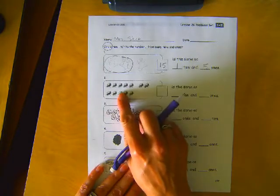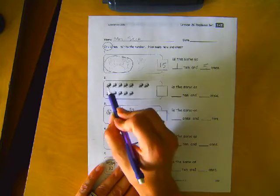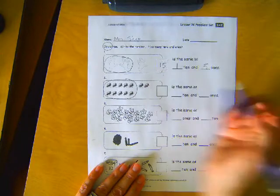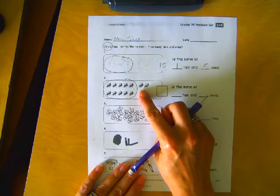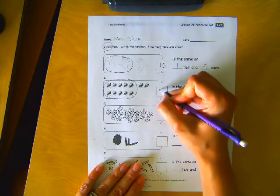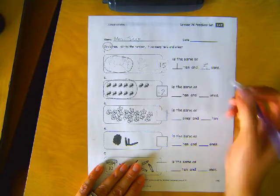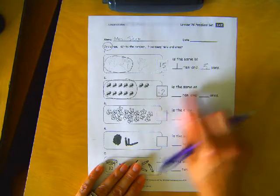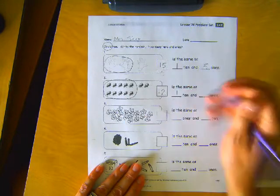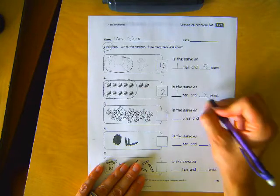Number two, circle ten. I see five and five, that makes ten. And I see two extra bugs. So ten and two makes twelve. Twelve is the same as blank ten and blank ones. And we have one group of ten and two extra ones.